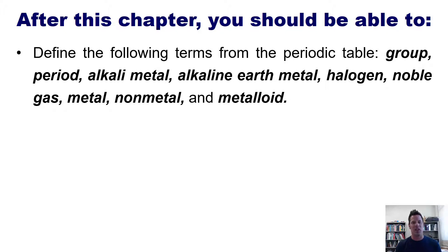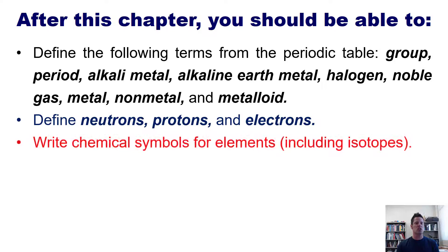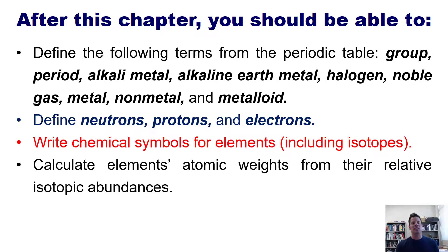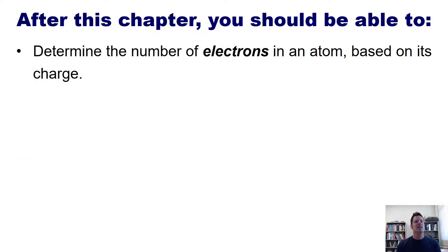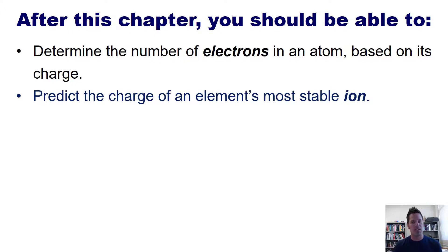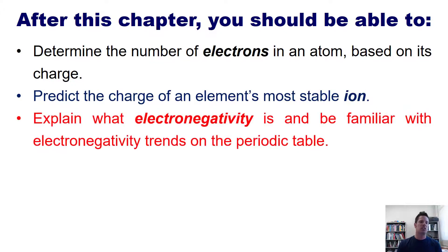Next, you should be able to define neutrons, protons, and electrons. You should also be able to write chemical symbols for elements including isotopes, and calculate elements' atomic weights from their relative isotopic abundances. In addition, you should be able to define empirical versus molecular formulas, determine the number of electrons in an atom based on its charge, predict the charge of an element's most stable ion, and explain electronegativity and its trends on the periodic table.